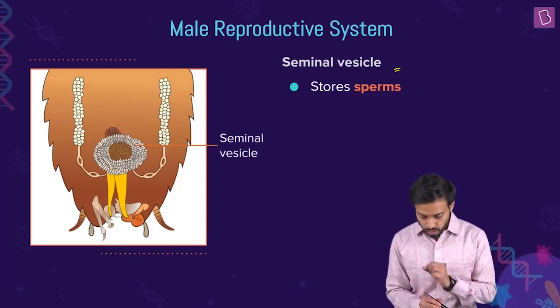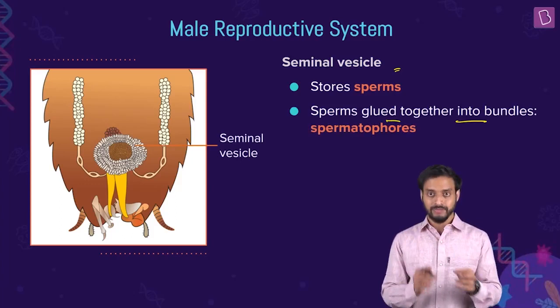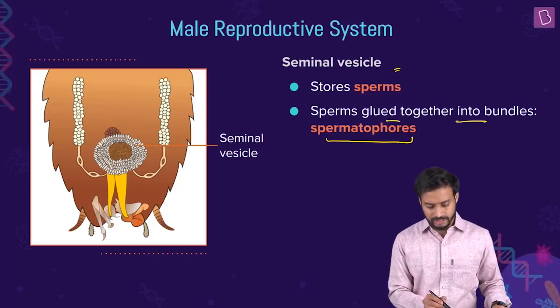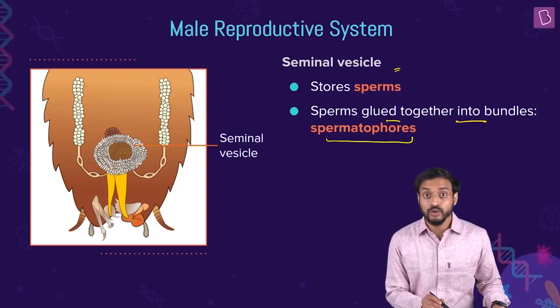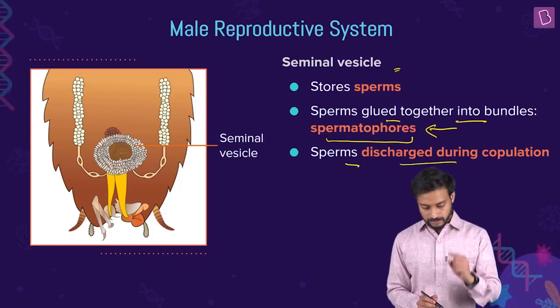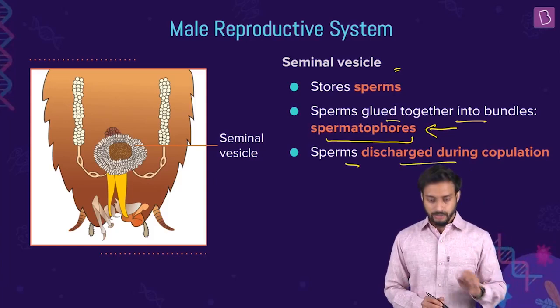The seminal vesicles store the sperms. The sperms are glued together into bundles called spermatophores — think of them as packets of sperms. Remember the word spermatophores. Sperms are discharged during the copulation process.